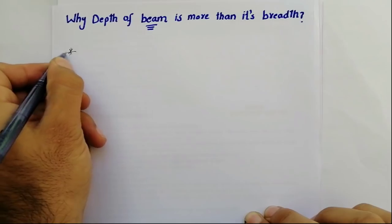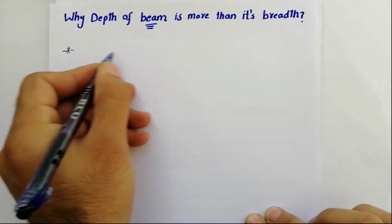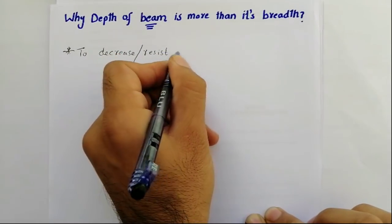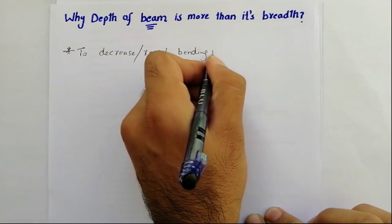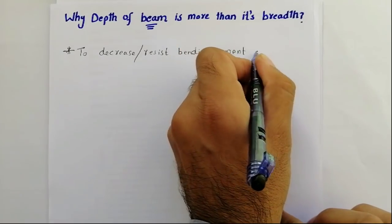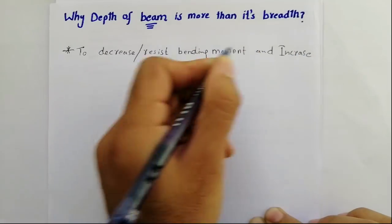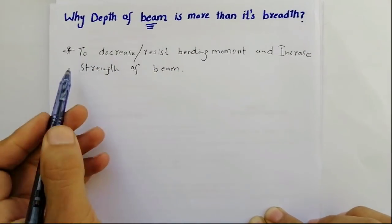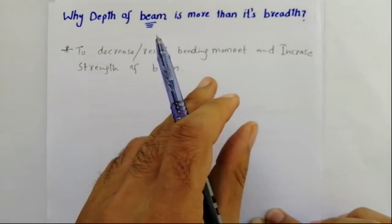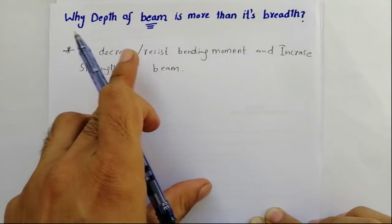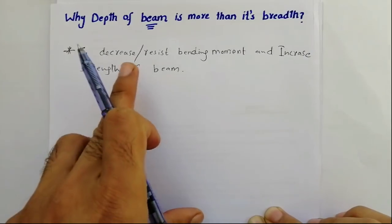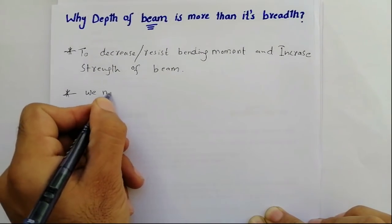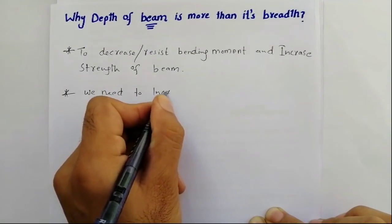The first point is: we keep the depth of the beam more than its breadth to decrease or resist bending moment and increase the strength of the beam. If we keep the depth of the beam more than its breadth, it decreases or resists bending moment in the beam, so there will not be more bending moment present — it can resist or decrease it.